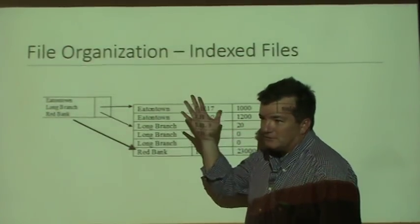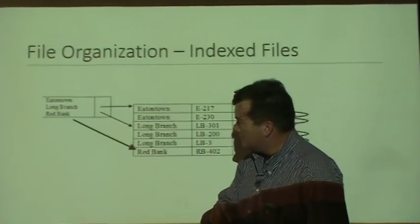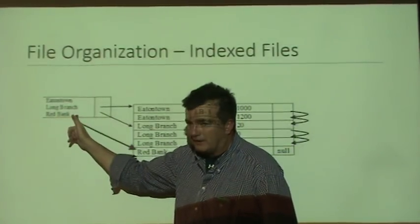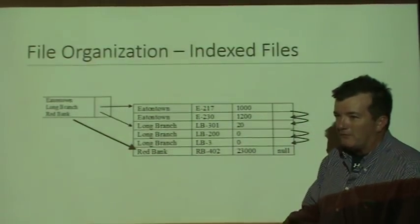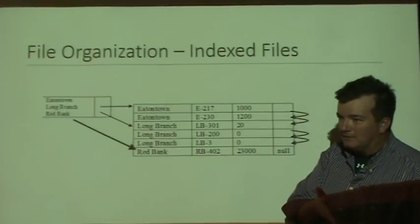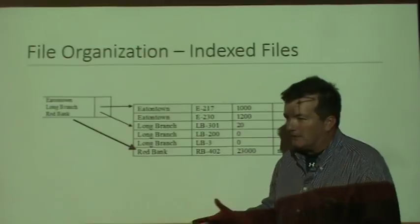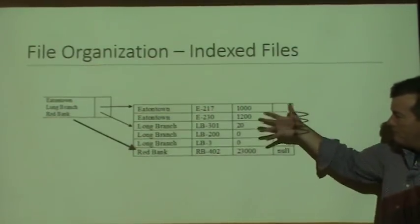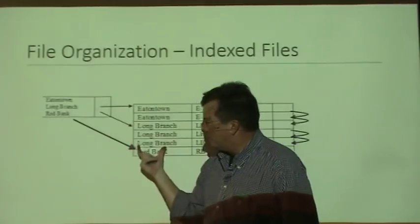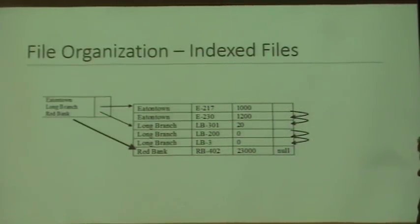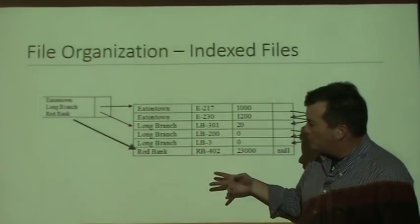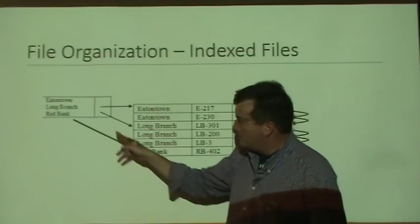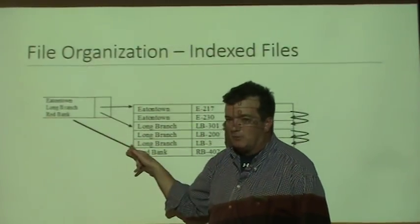The advantage of having an index is we can find specific records quicker. The disadvantages are: first, you're taking up extra space creating the index — like adding pages to a book. Second, anytime you want to find anything, the first thing you must do is go to the index. Third, if you add a new record for a brand-new branch, you have to update the index with a new field and pointer.